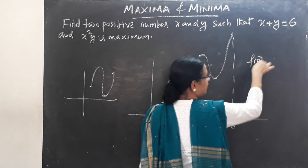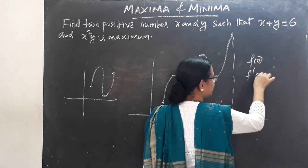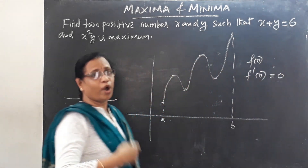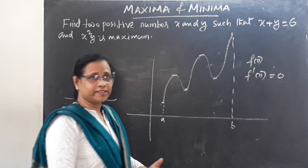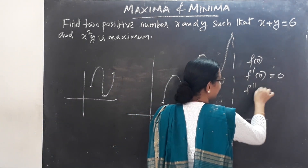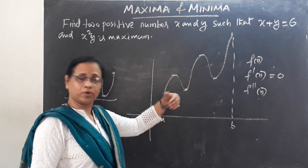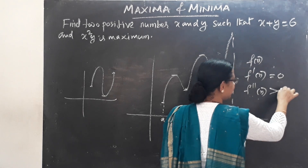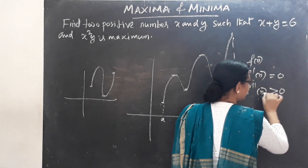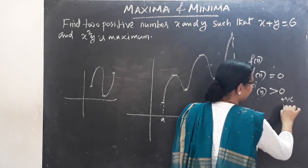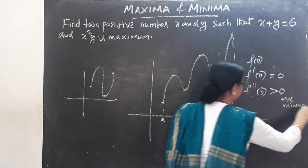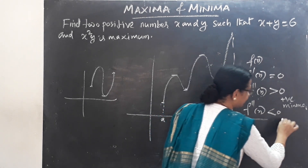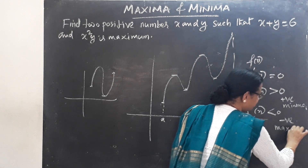Where do you find the minimum and maximum value? The first step is to take the first derivative of the function and set it equal to zero — those are the critical points. Then apply the second derivative. If the second derivative is greater than zero (positive), this is a minimum. If f''(x) is less than zero (negative), this is a maximum value.